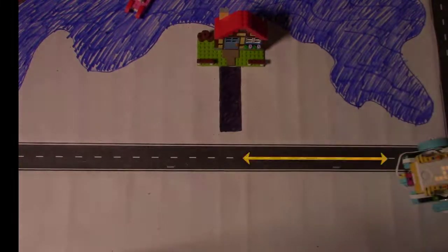Let's consider how the color sensor could help Chariot move to the center of the road each time.